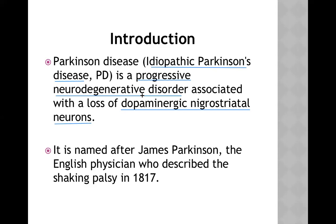The substantia nigra is part of the midbrain and is very rich in dopaminergic neurons. In Parkinson's disease, those neurons are dying or disappearing. Unlike demyelinating disease — where only the myelin sheath is affected while the nerve is intact — in Parkinson's disease the whole nerve is dying. That is why it is called a neurodegenerative disorder.